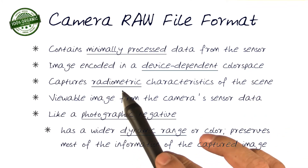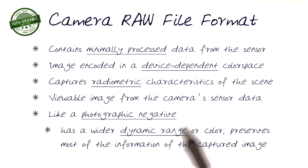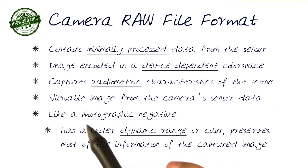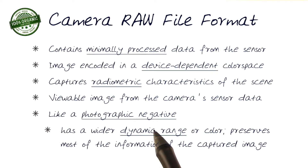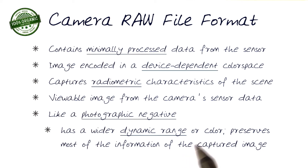Radiometrics — all the color values are well-defined and captured raw. And of course, this represents an equivalent class to the photographic negative: it lets you control things after the fact and allows you to do things like changes in dynamic range, color, and most of the information of the captured image is available to you.